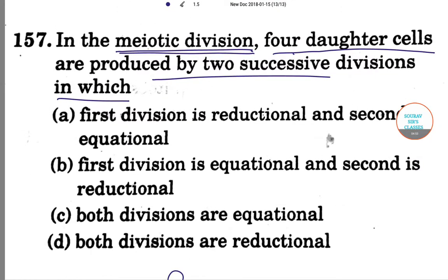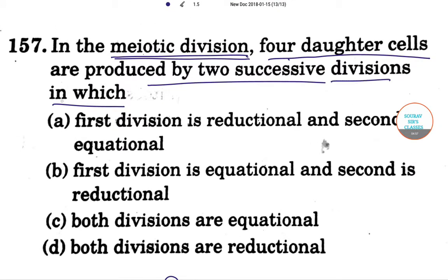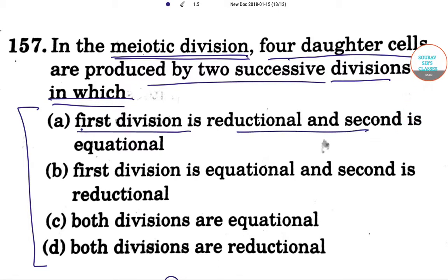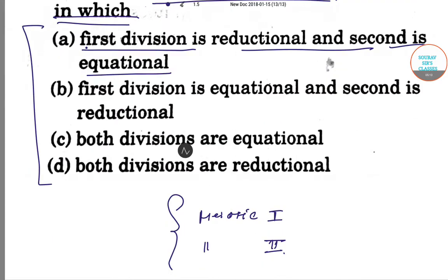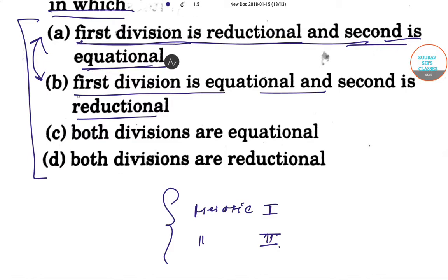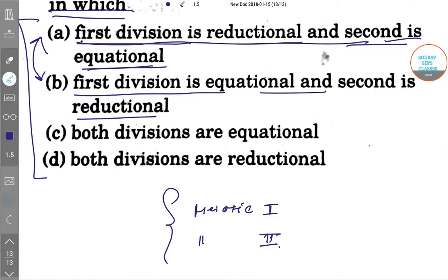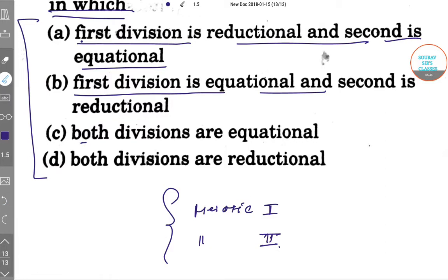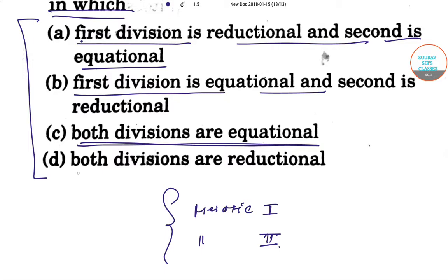Let's see what we are asked. There are four statements. Option A: first division is reduction and second division is equational. Option B: first division is equational and second division is reduction — the opposite of option A. Option C: both divisions are equational. Option D: both divisions are reduction.